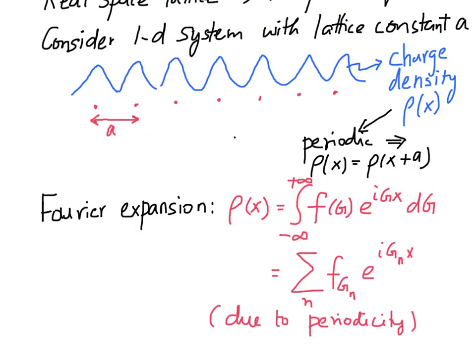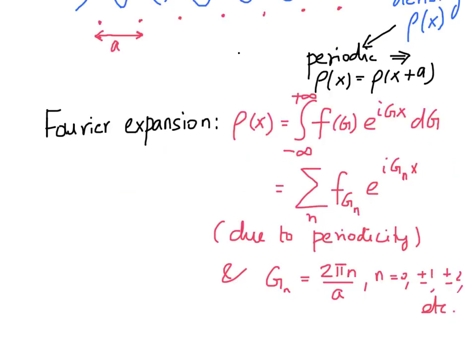So, the integral has been replaced by a sum, and the G can take on only specific values. So, the integral, G could take on any value. It was a continuous variable, whereas in the summation, G has to take on specific values of this type. So, G is given by 2πn/a, where a is, of course, the lattice parameter, and n is any integer, positive, negative, or even 0.